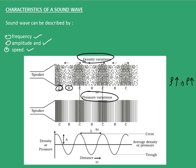Similarly, the rarefaction region has particles which are less in number. Therefore, the density in this region is less compared to the compression region. Hence, the pressure of the rarefaction region is also less. Now we can relate density or pressure with distance as the sound wave propagates.